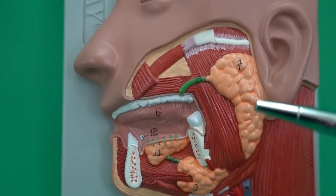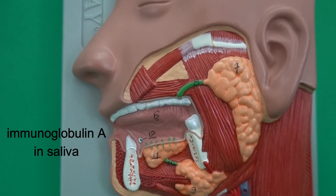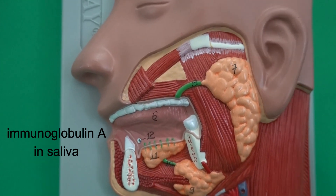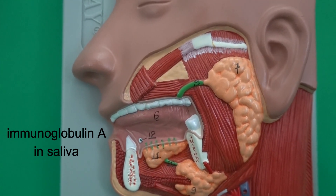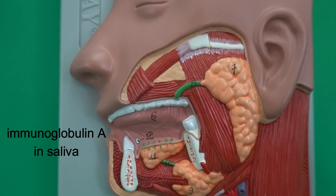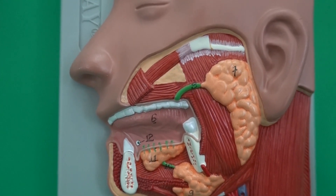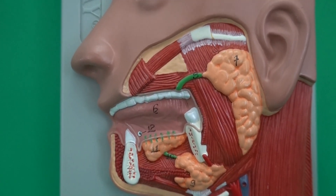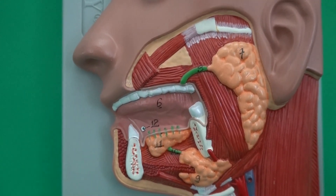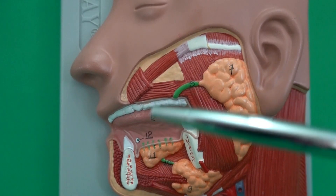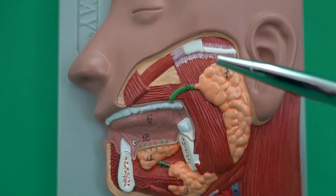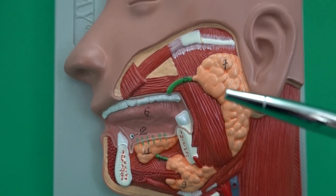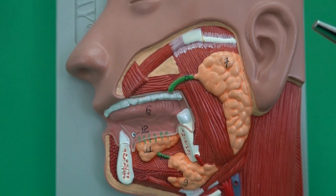In saliva, we also find immunoglobulin A, which makes it very difficult for microorganisms to attach to and invade our cells. So we can say that saliva, aside from cleaning the inside of the mouth and moistening food, also has a role in immunity.